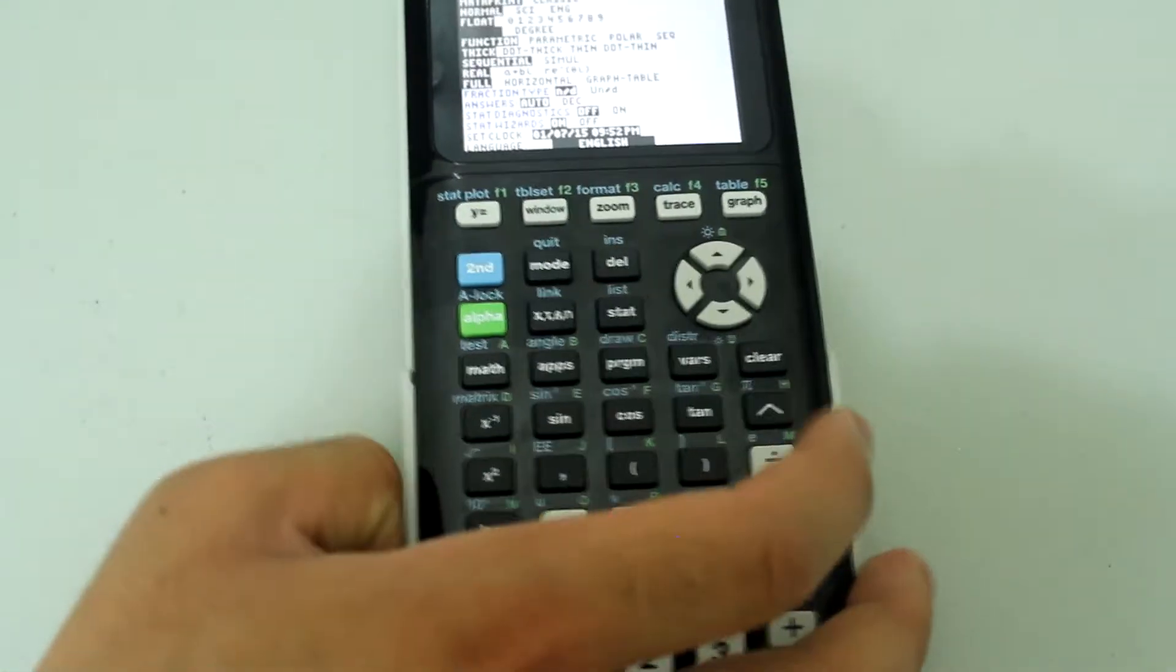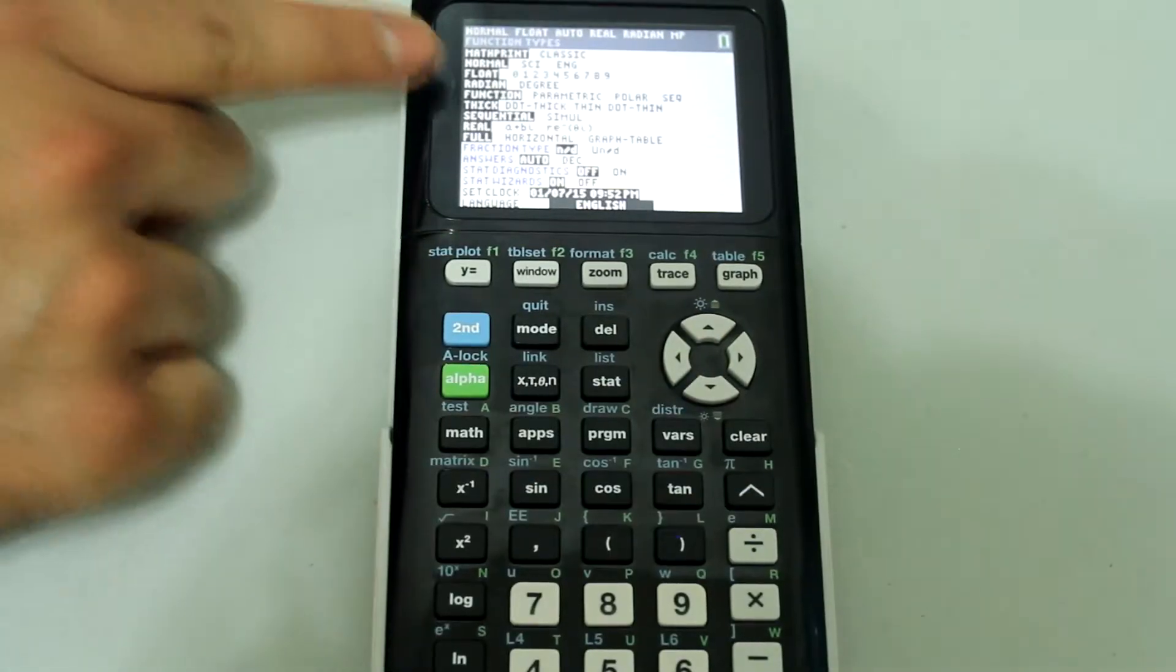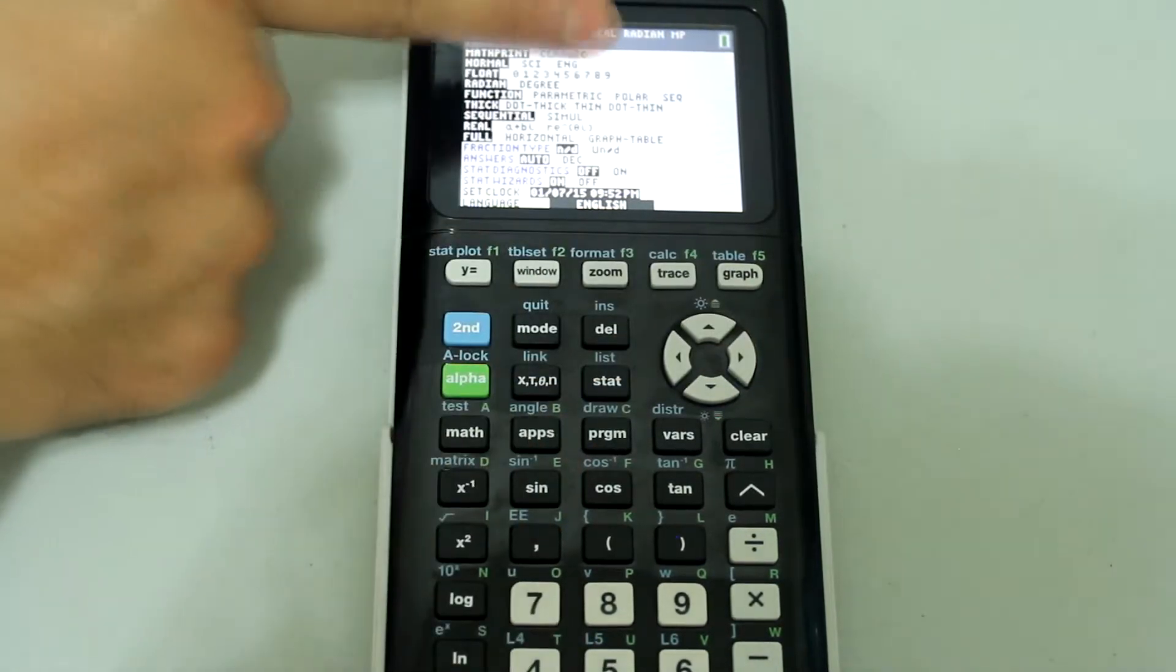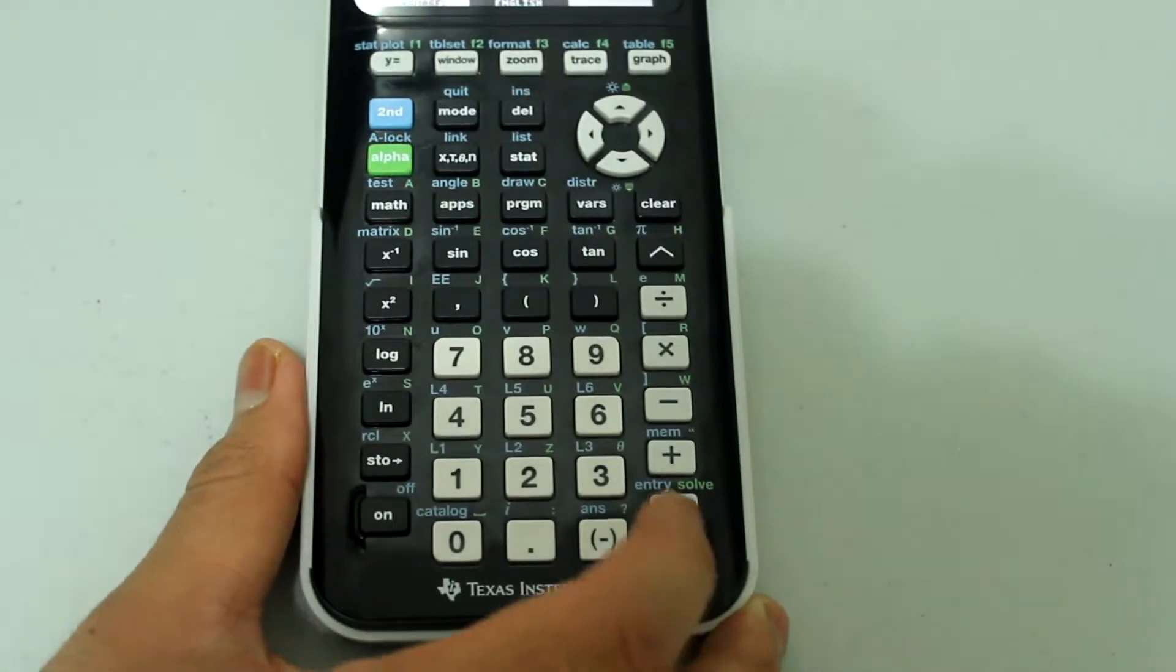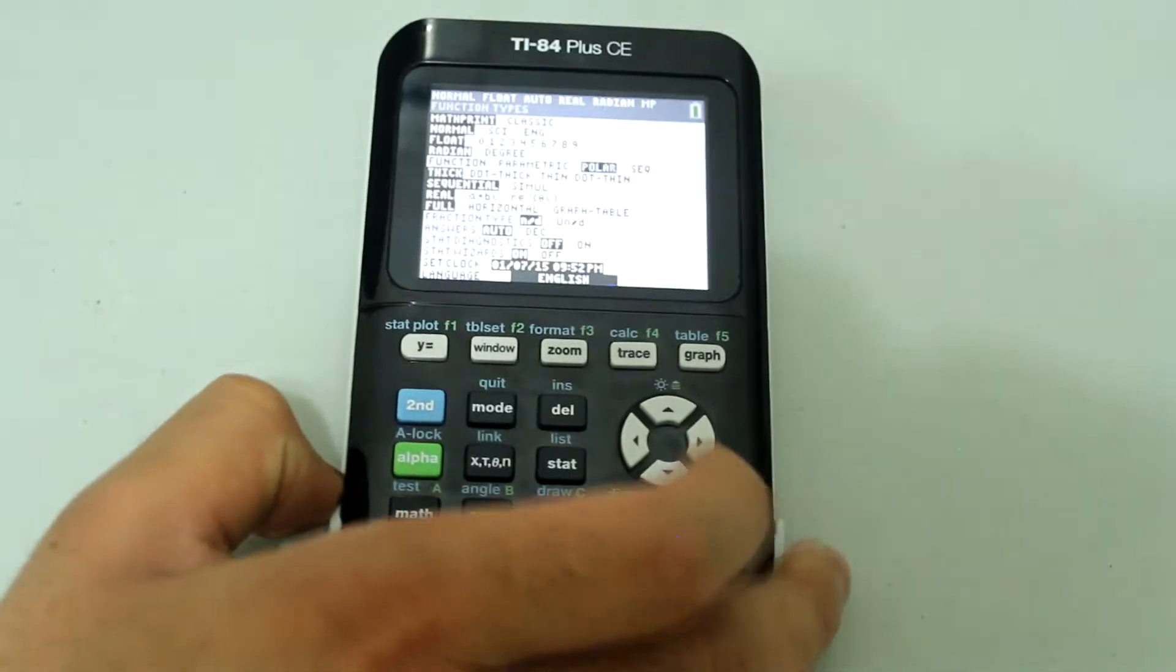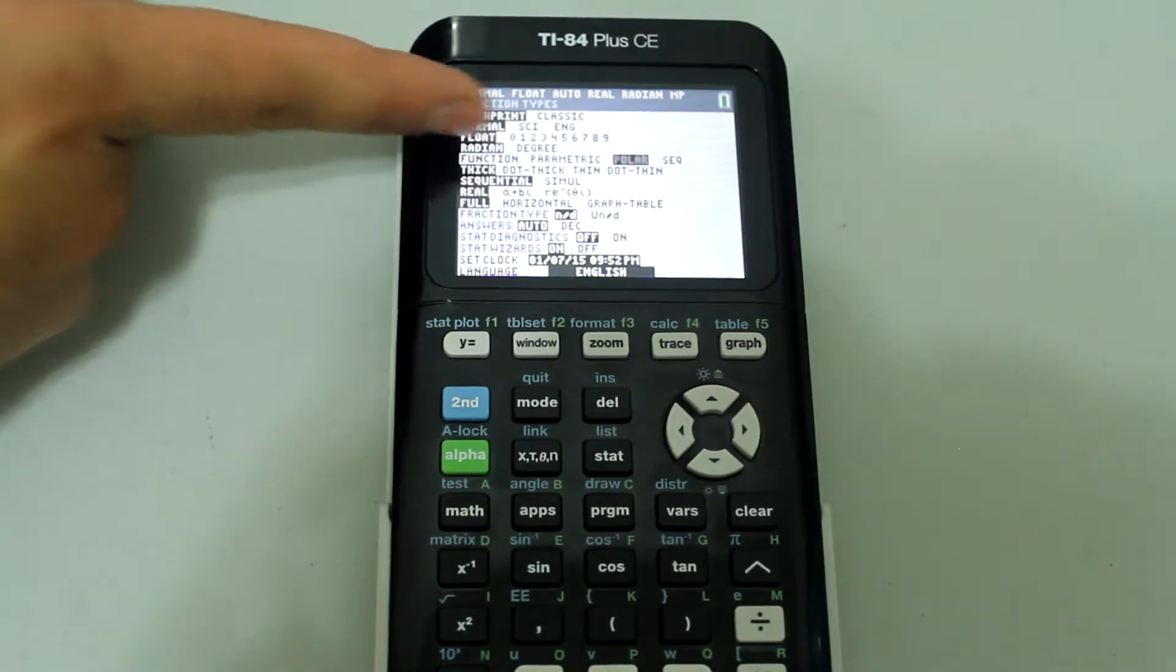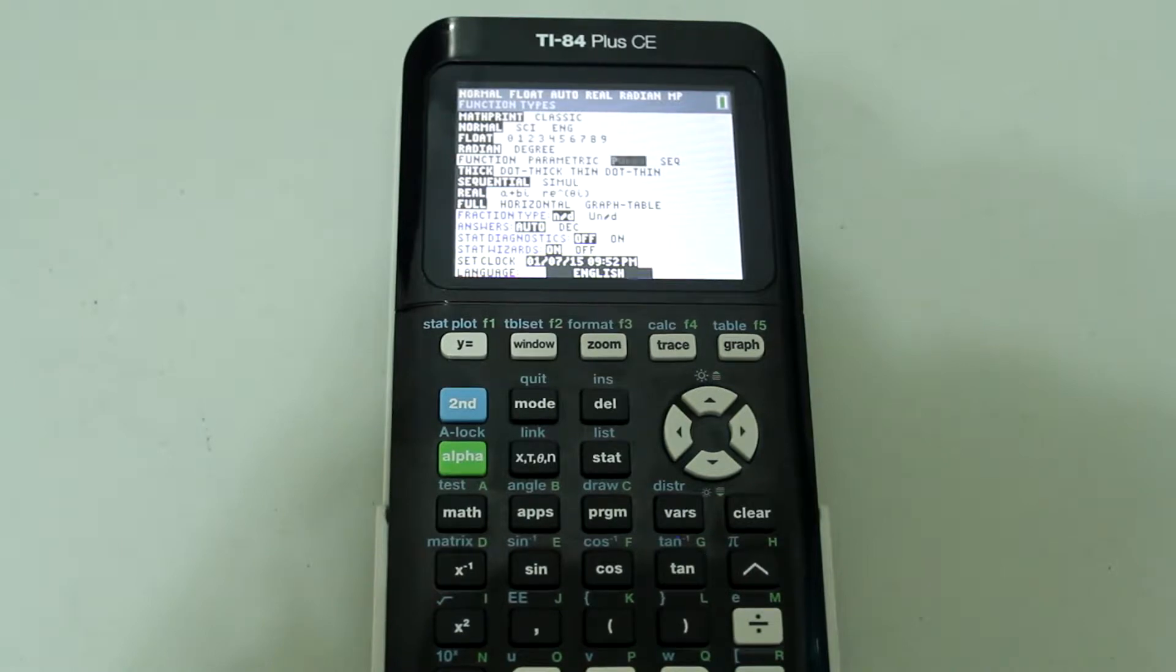Then arrow down to where it says function and I am going to arrow over to polar. And once the cursor is blinking on polar, press enter. On some model calculators this might be abbreviated as FUNC and this might be POL, but now you know it is function and polar.